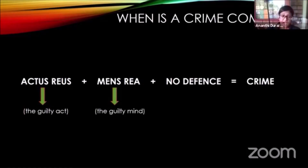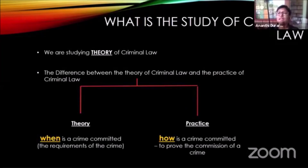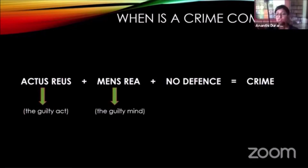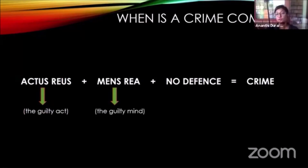So a crime requires: actus reus, mens rea, and no defence. If I did the actus reus with the mens rea without a defence, then it is a crime. But if I do the actus reus with the mens rea but with a defence, then it doesn't amount to a crime. These Latin terms — actus reus, mens rea — are not language you would have seen before, but this is the language you need to know in the study of criminal law.